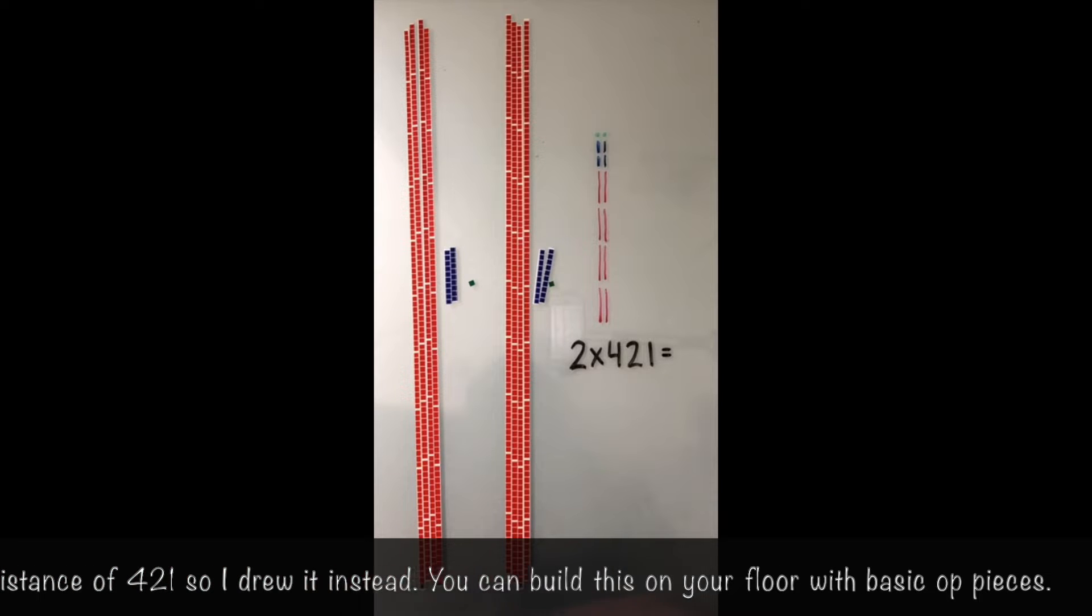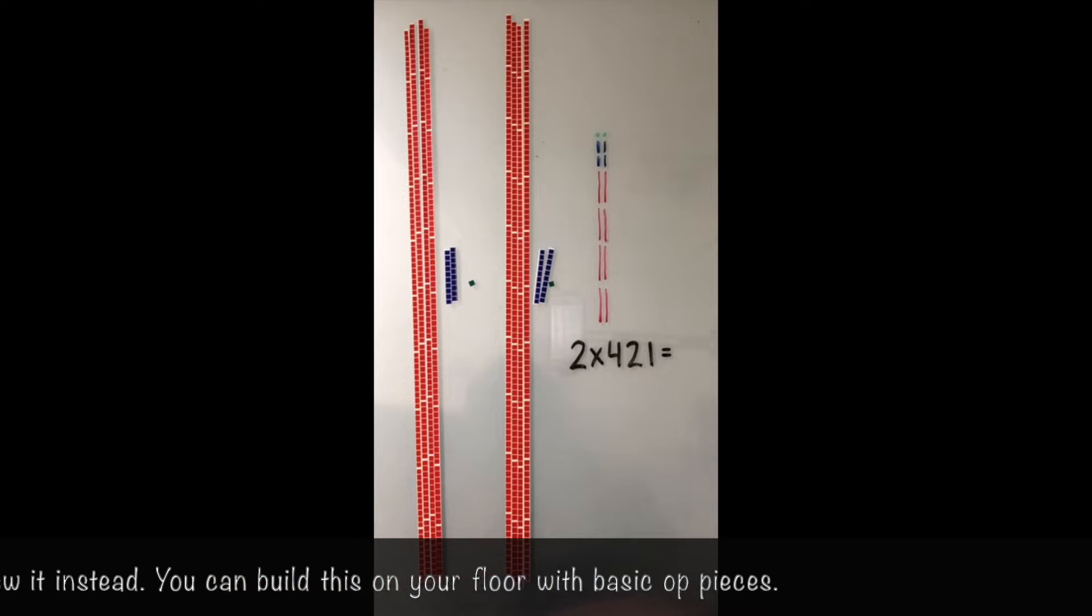When we put these side by side we will have one big group, two across, 421 up. This will be a rectangle, two across, 421 up.